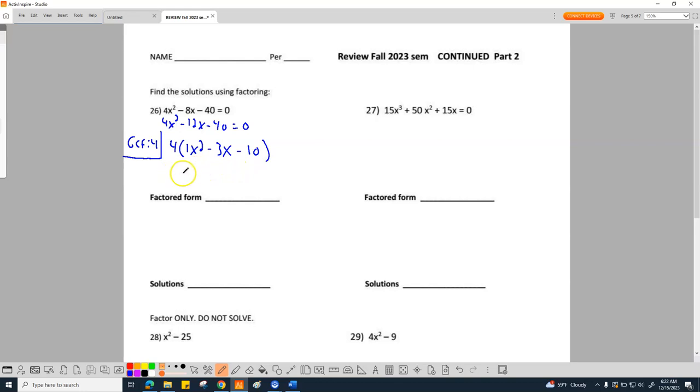And so now we can go ahead and factor using our A method. Our A is 1. Our B is negative 3. Our C is negative 10. And then our A times C is negative 10. Let me write this prettier. Negative 10 and then AC is negative 10.